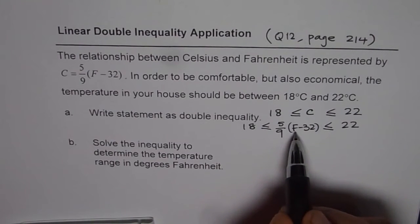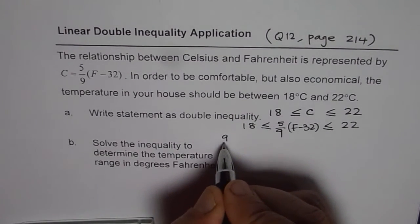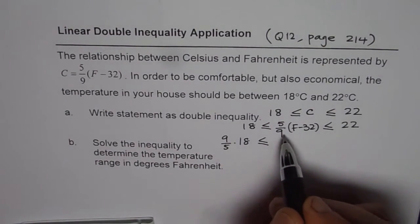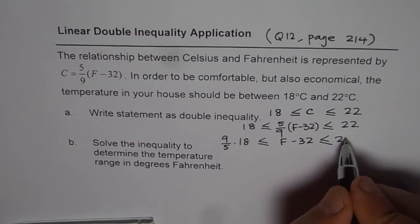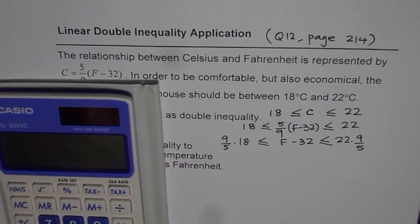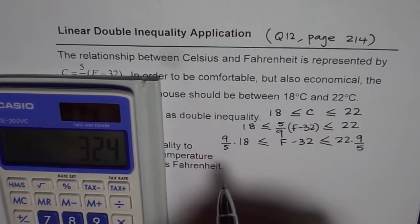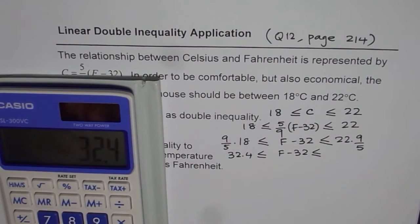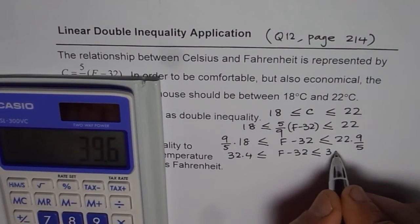Now to find the value of F, first we should multiply all three terms by 9 over 5. What we get is 9 over 5 times 18 is less than or equal to, and if I multiply 5 over 9 by its reciprocal which is 9 over 5, it would be 1, so I am left with F minus 32 in the center. On the right side we get 22 times 9 over 5. We can use the calculator and find this answer. So we have 9 divided by 5 times 18 equals 32.4, which is less than or equal to F minus 32, which is less than or equal to 22 times 9 divided by 5, which equals 39.6.